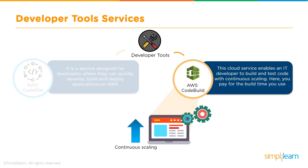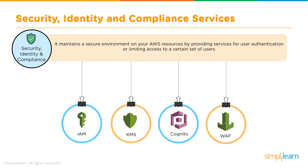AWS CodeBuild is a cloud service that enables an IT developer to build and test code with continuous scaling — and you pay only for the build time used. CodeBuild is a fully managed service that compiles source code, runs tests, and produces software packages ready to deploy. With CodeBuild, there is no need to provision, manage, or scale your own build servers. CodeBuild scales continuously and processes multiple builds concurrently, so builds are not left waiting in a queue.